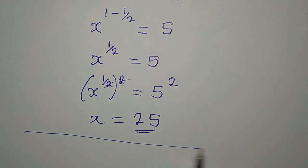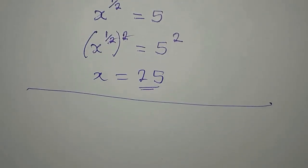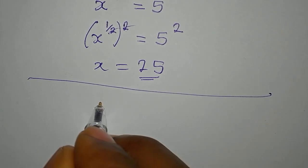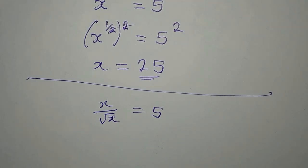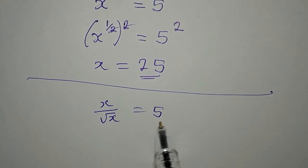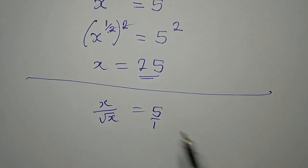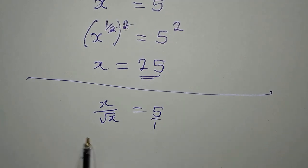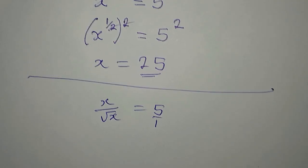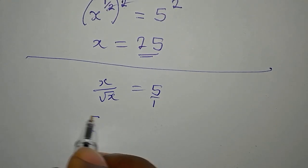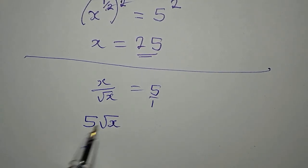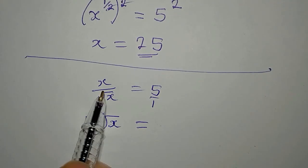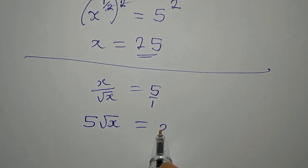Now, let's use the second method. We still have x over square root of x equals 5. So the second method I will use is to cross multiply. Because this is over 1. And I'm going to cross multiply. As I have 5 times root x is 5 root x equals x times 1. And it is x.